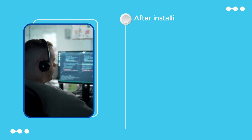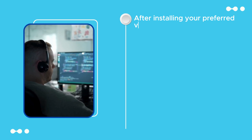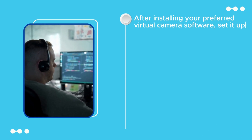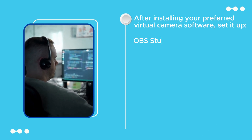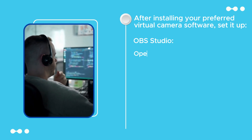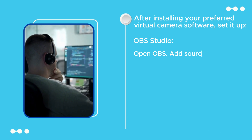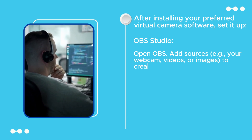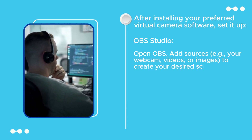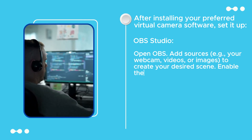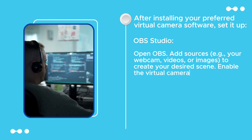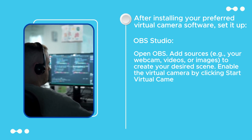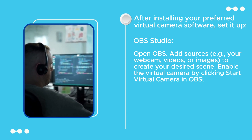After installing your preferred virtual camera software, set it up. In OBS Studio, open OBS and add sources — for example, your webcam, videos, or images — to create your desired scene. Then enable the virtual camera by clicking 'Start Virtual Camera' in OBS.